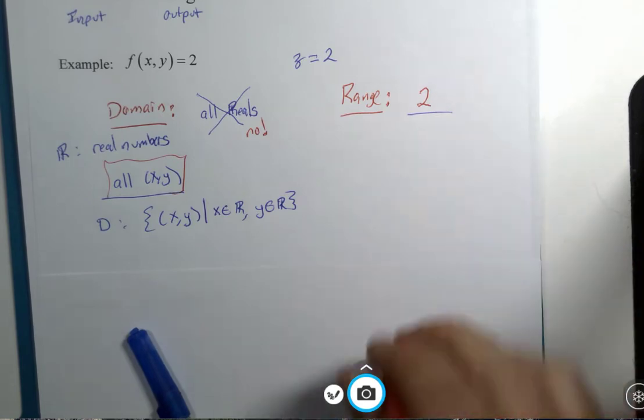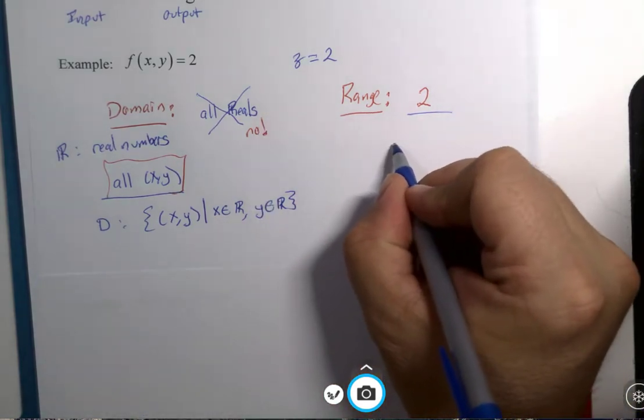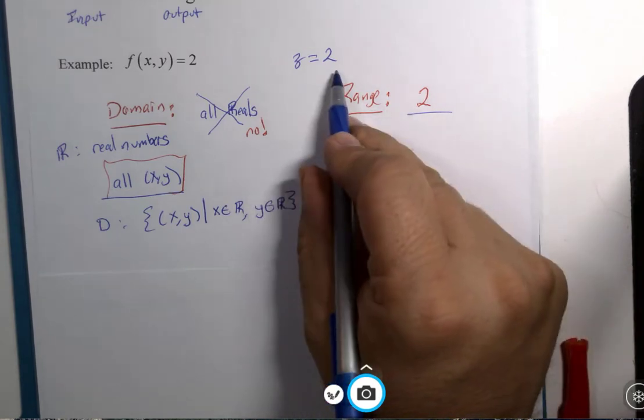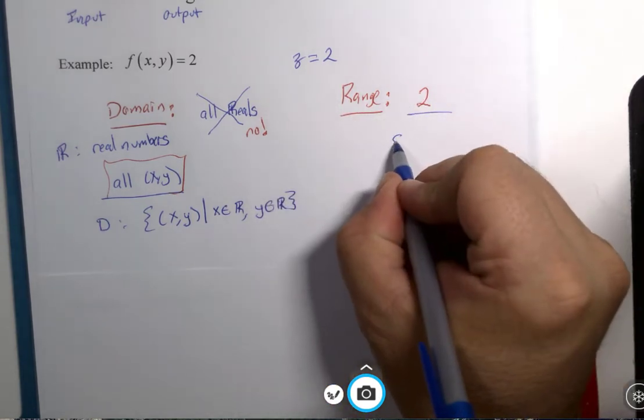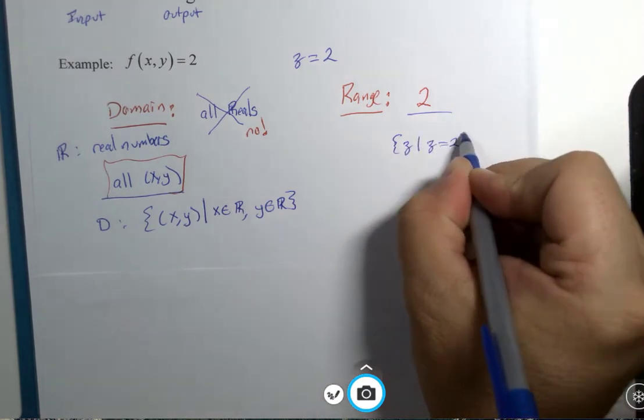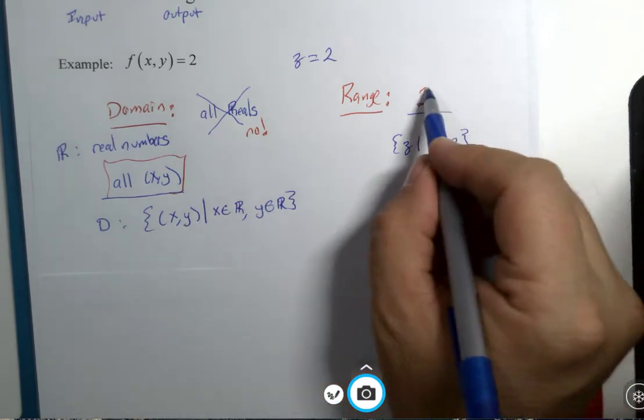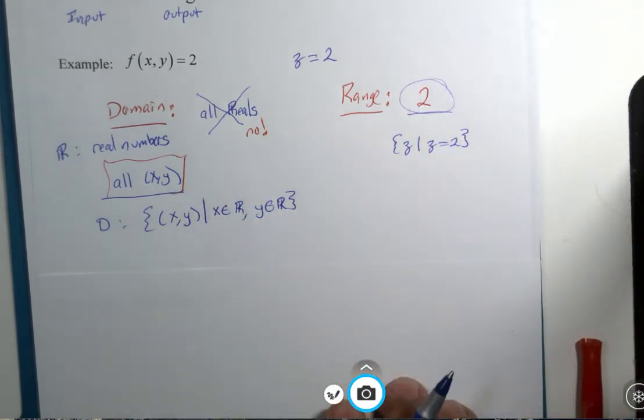For the range, I guess we could say z equals 2 is the range, or the range is 2, or we could say the set of all z values such that z equals 2. So there's your first example.